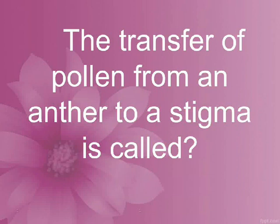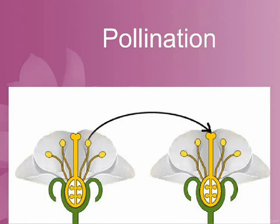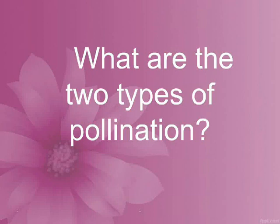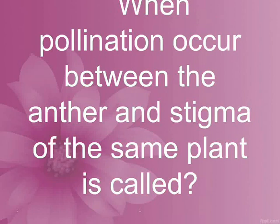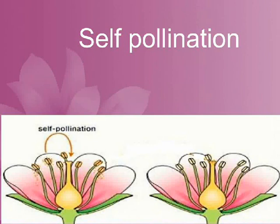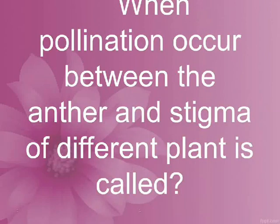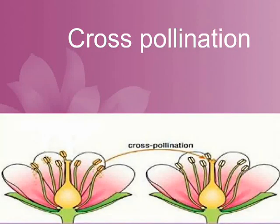The transfer of pollen from an anther to a stigma is called pollination. What are the two types of pollination? Self and cross pollination. When pollination occurs between the anther and stigma of the same plant, it is called self pollination. When pollination occurs between the anther and stigma of different plants, it is called cross pollination.